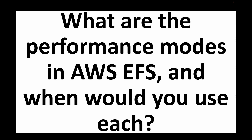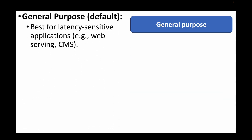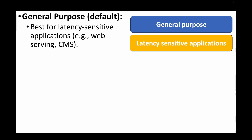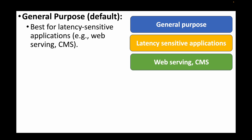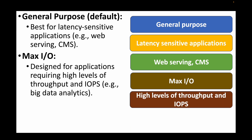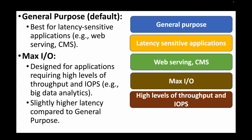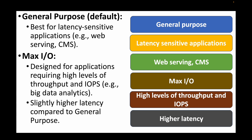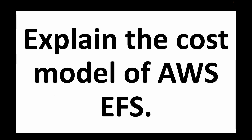The next question is: what are the performance modes in AWS EFS and when would you use each? General Purpose is the default — use this for latency-sensitive applications like web serving or CMS applications where you don't want any latency. Max I/O is designed for applications that need high throughput and high IOPS, ideal for big data analytics, but it has slightly higher latency compared to General Purpose.